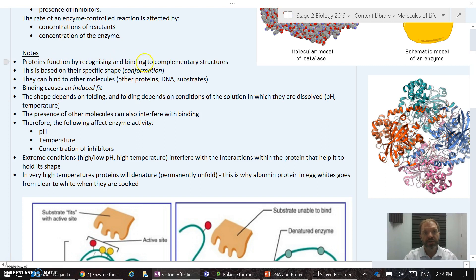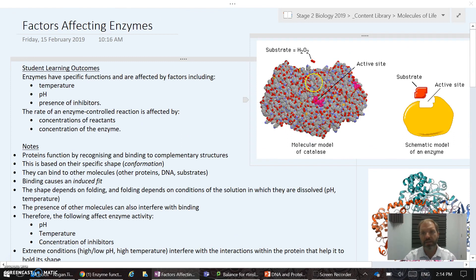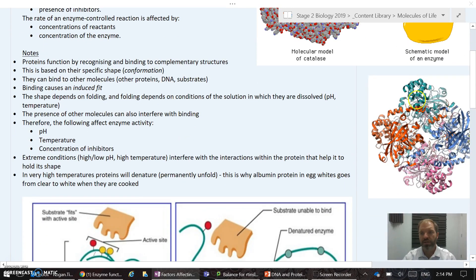Proteins function by recognizing and binding to complementary structures because of their shape. Here's again the enzyme for catalase. It has an active site here and the substrate binds into that active site. We tend to draw things schematically like this substrate fitting into its active site, but also we might use this ribbon diagram to show the four different polypeptides that make up the catalase enzyme. This folds to make a particular shape that forms the pocket that's the active site, and that needs to fit by the induced fit model whatever the substrate is.